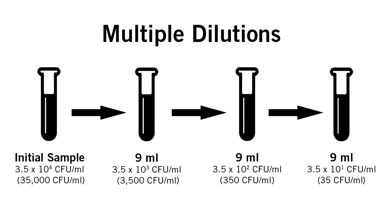We would take one milliliter from the initial tube and place it in 9 milliliters. This would equal 3,500 CFU per milliliter or 10 to the third. Another dilution would take the concentration to 350 CFU per milliliter or 10 to the second and the final dilution would equal 35 CFU per milliliter, our target concentration.